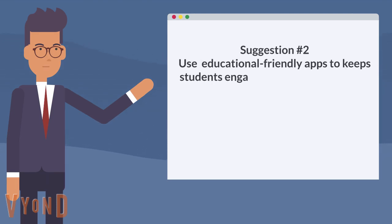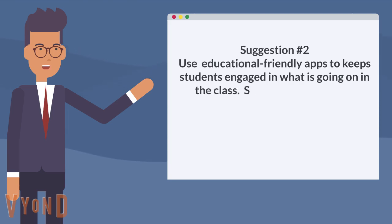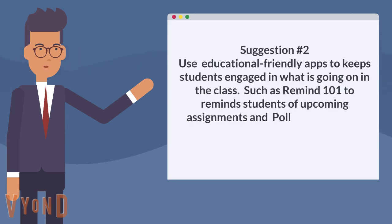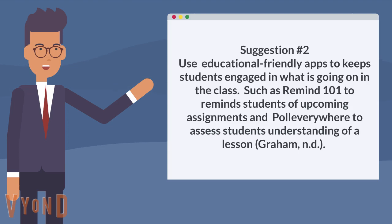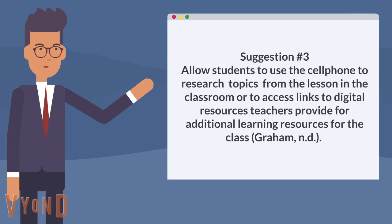Suggestion number two: use educational friendly apps to keep students engaged in what is going on in the class. Use the Remind app to remind students of upcoming assignments, and Poll Everywhere to assess students' understanding of a lesson. Suggestion number three: allow students to use their cell phones to research topics from the lesson in the classroom and to access links to digital resources teachers provide.